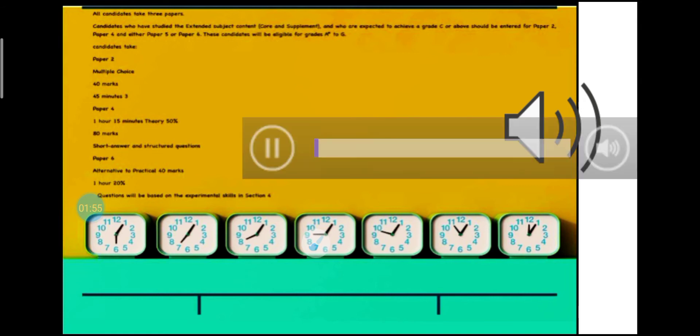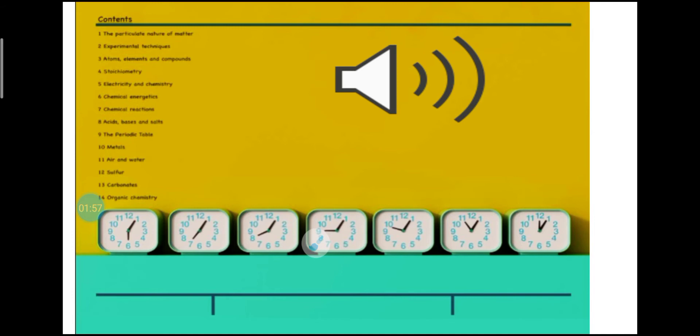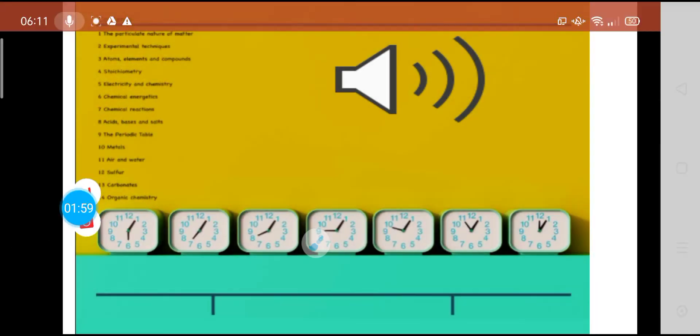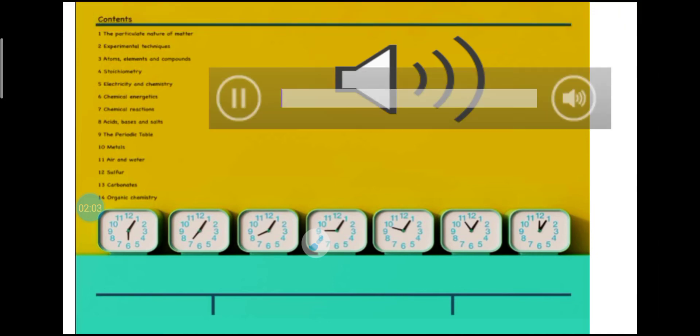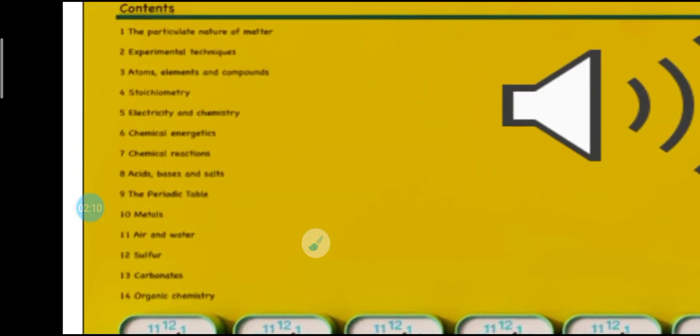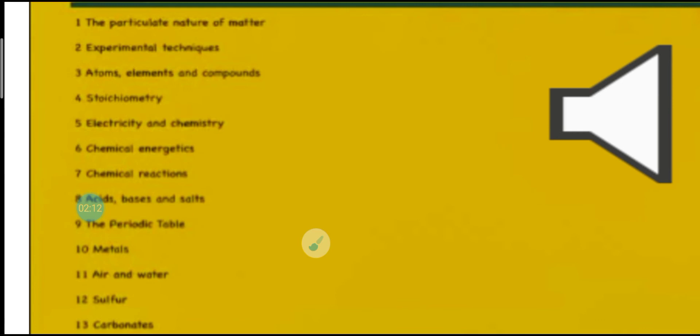During this course, we have to cover 14 points which represent the syllabus. The first thing is the particulate nature of matter. Second, experimental techniques. Third, atoms, elements and compounds. Fourth, stoichiometry.